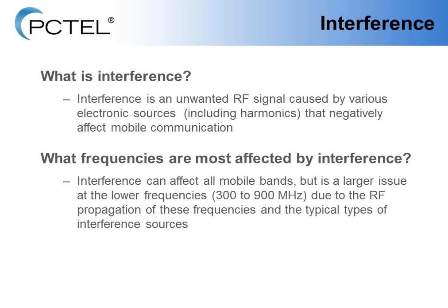To begin with the interference overview, I first want to define what interference is. An interference is an unwanted RF signal caused by various electronic sources, including harmonics, that negatively affect mobile communications. This can be either internal interference — what we call co-channel or adjacent channel interference — or it could be external interference, which is really the focus of this webinar.